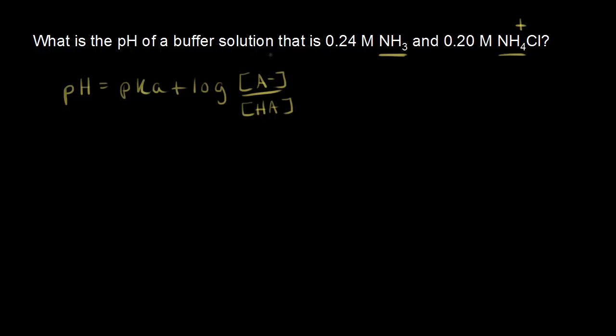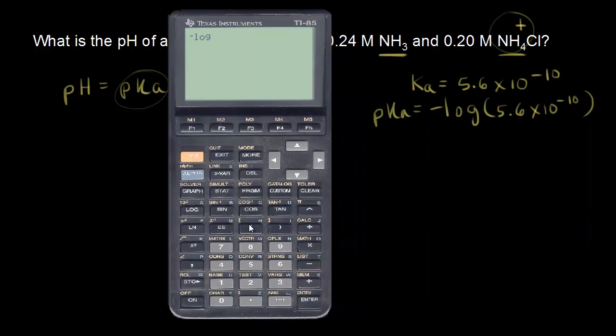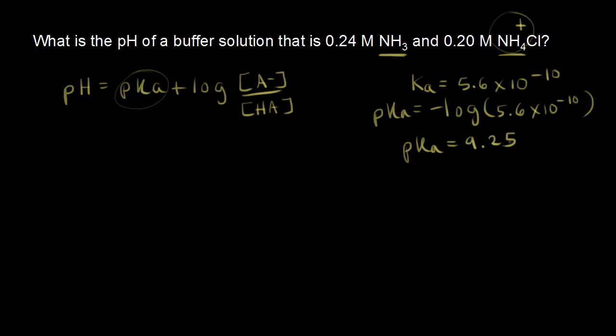The first thing we need to do to calculate the pH of our buffer solution is to find the pKa. Our acid is NH4 plus, and the Ka value for NH4 plus is 5.6 times 10 to the negative 10. To find the pKa, we take the negative log of that, which gives us a pKa of 9.25.